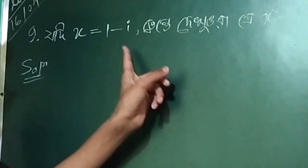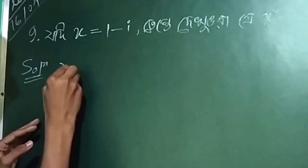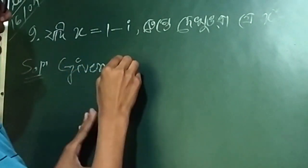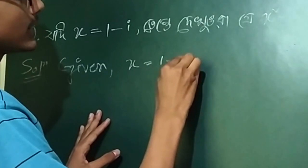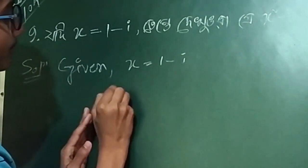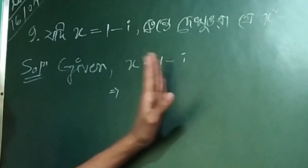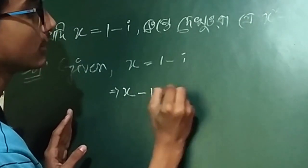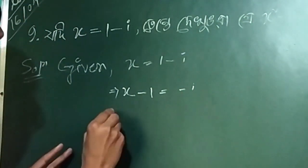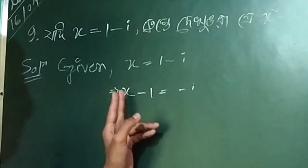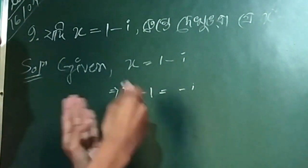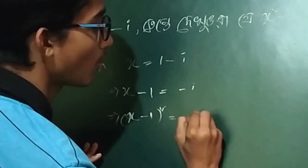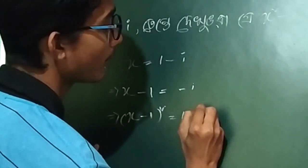For the solution, it is given that x equal to 1 minus i. So, x minus 1 is equal to minus i. Now, squaring both sides, we get x minus 1 whole square equal to minus i whole square.